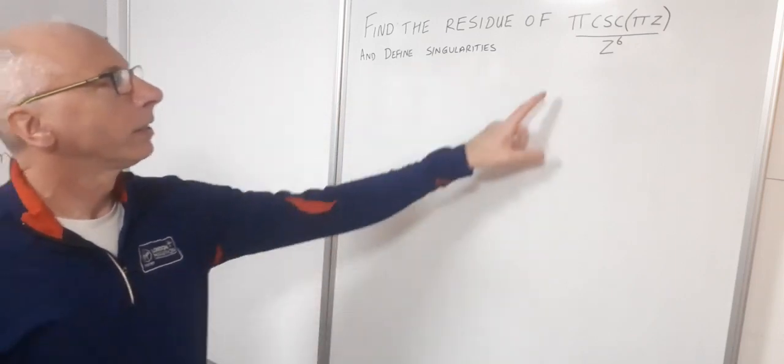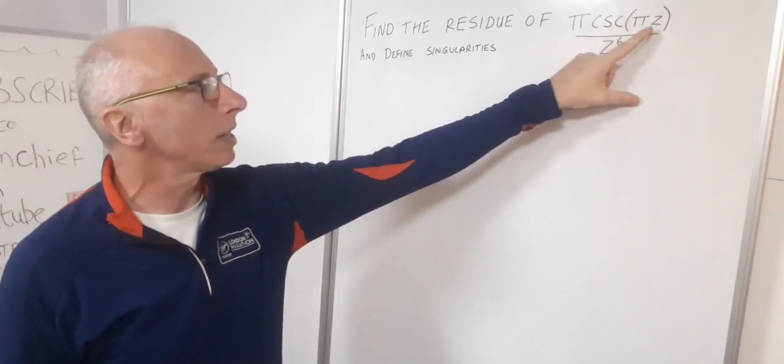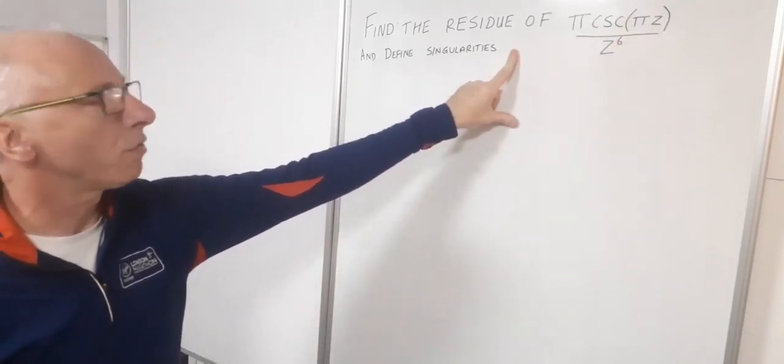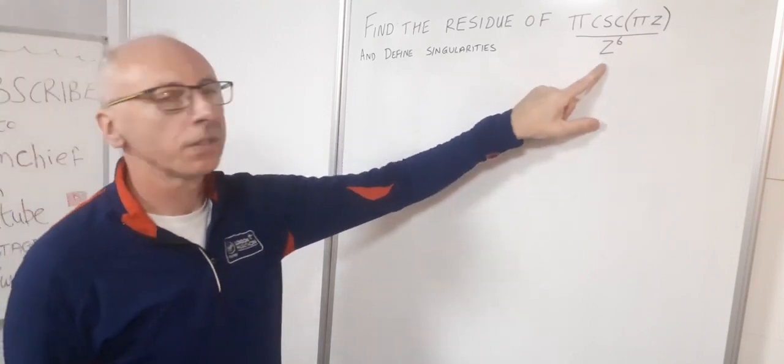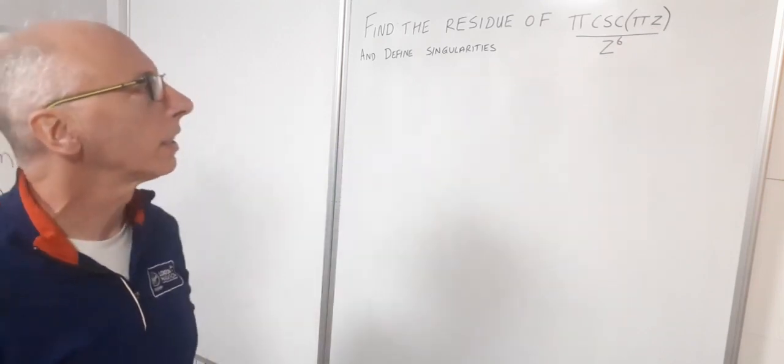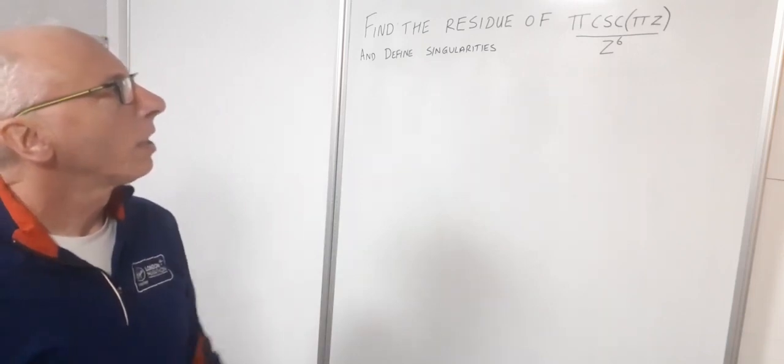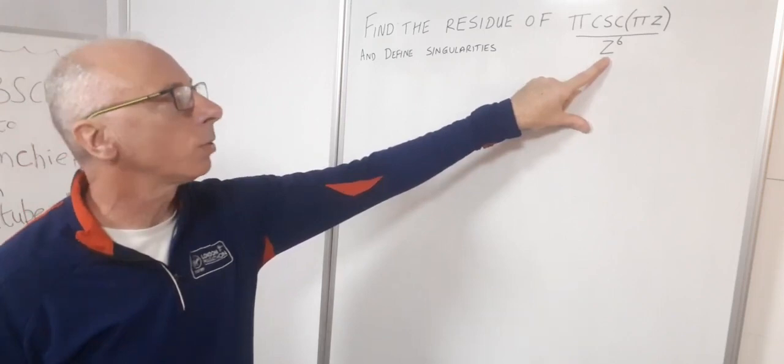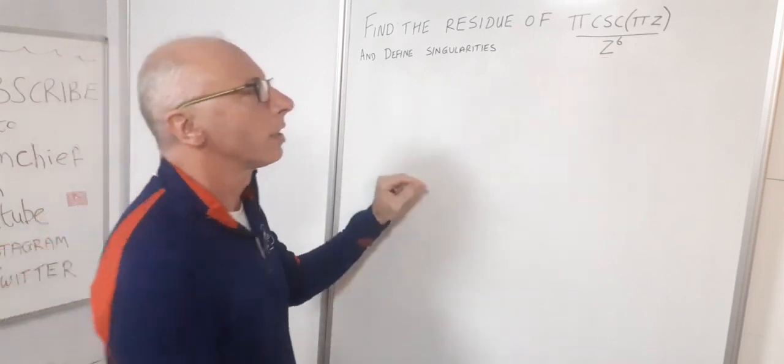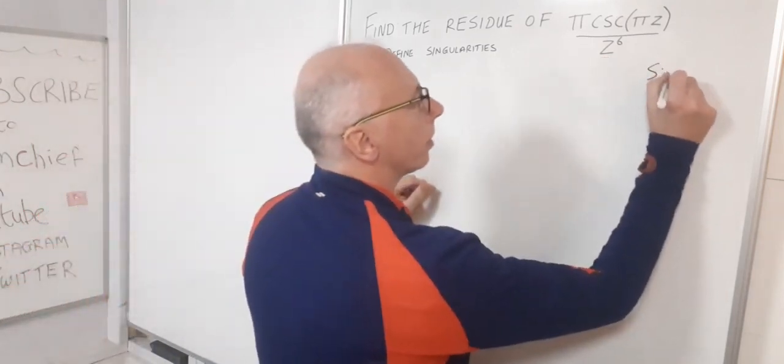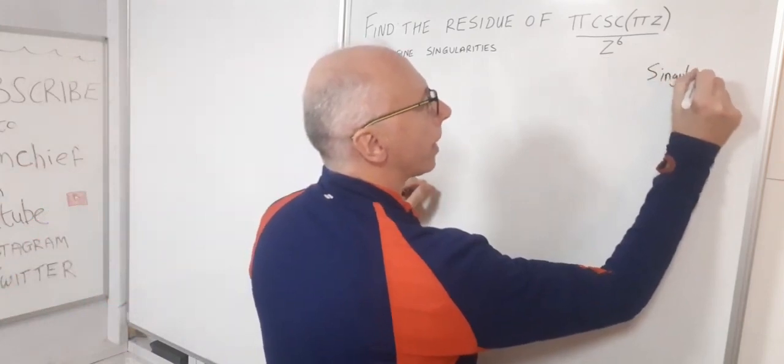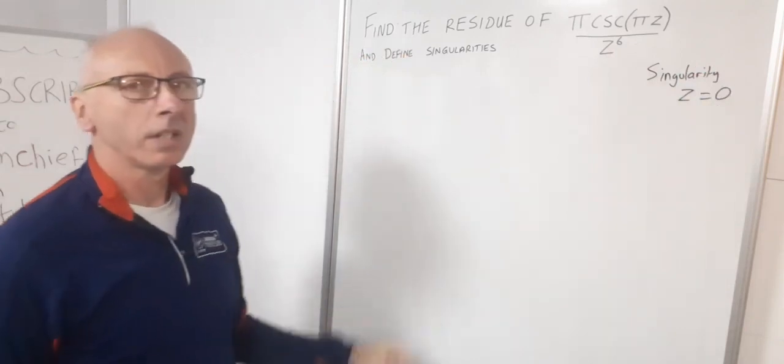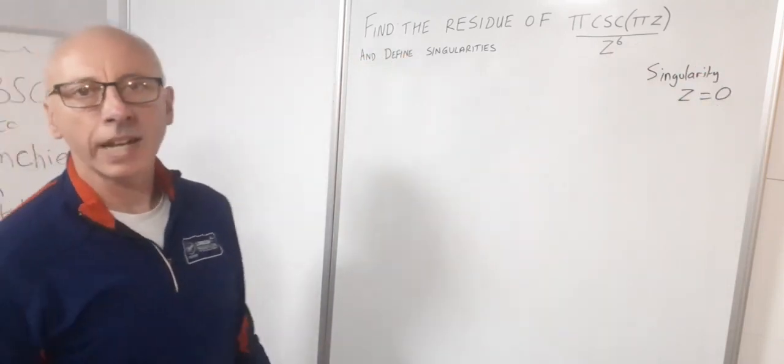So π cosecant(πz) over z to the 6. Looking for how to find the residues, first thing we need to find the singularities. So this here has a singularity at z equals zero. So z equals zero, this function is no longer analytic.